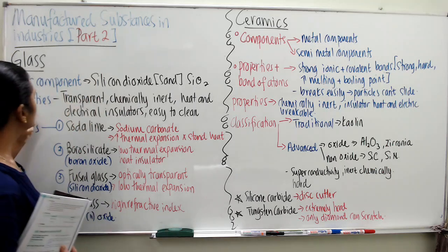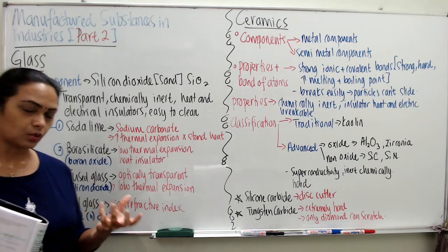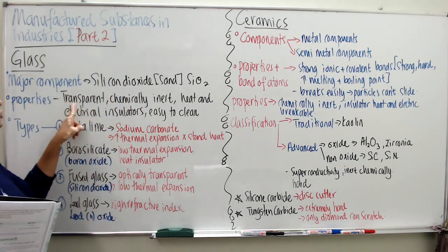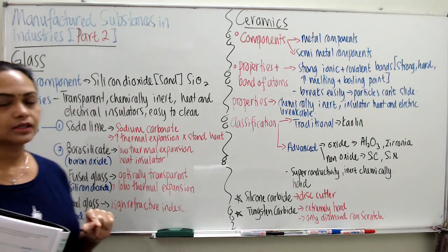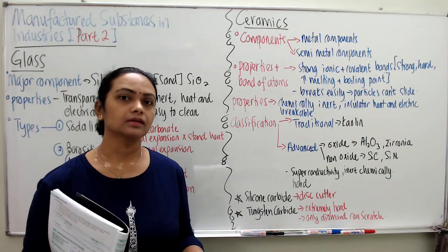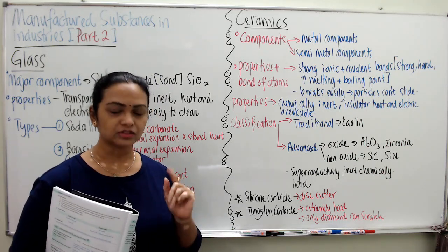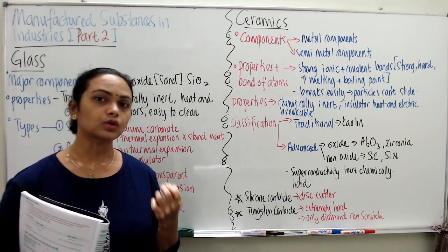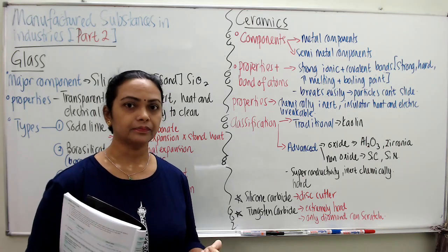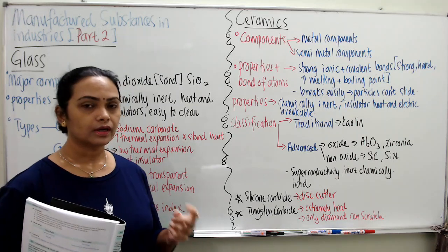Now let's go to properties. Glass is very popular in industries and daily usage. The main reason is because it is transparent and chemically inert. For instance, if you want to keep vinegar or some corrosive substances, glass is one of the best options to store them, because it does not get corroded.